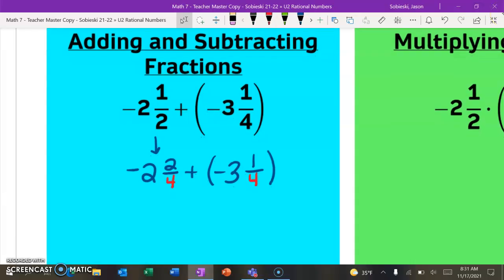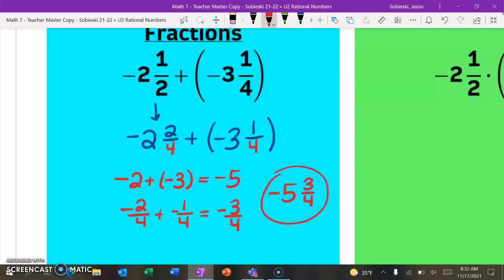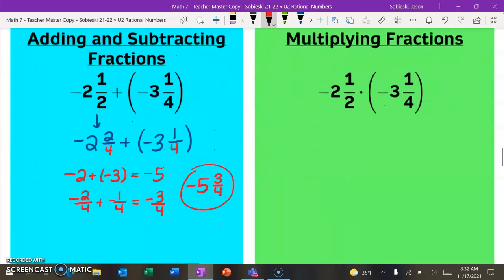All right, so for adding and subtracting, we just need common denominators. If we switch the 1/2 to 2/4, we're good to go. Now we can just add our whole numbers together. -2 plus -3 gets us -5. Then -2/4 plus -1/4 will get us -3/4. We can combine those and get our final answer of -5 and 3/4. You could have also switched both of those mixed numbers into improper fractions and done it that way. It is your choice.